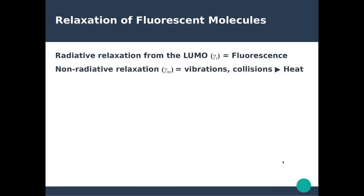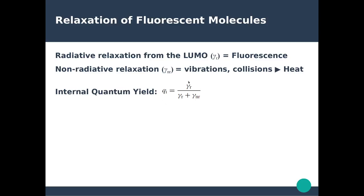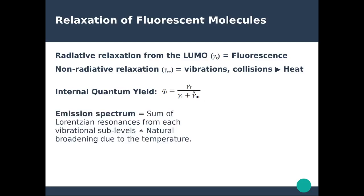Looking at the relaxation process further: we can have radiative relaxation from the LUMO to the HOMO, which is the fluorescence, described by the radiative decay rate. There is also non-radiative relaxation via emission of vibrations or collisions, which often result in heat, described by the non-radiative decay rate. We introduce the internal quantum yield Q, which is the ratio of the radiative decay rate to the total decay rate — both radiative and non-radiative — measuring how much of the absorbed optical excitation is converted into fluorescence.